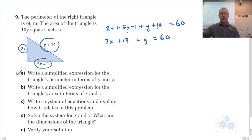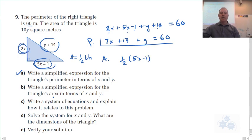Write the simplified expression for the triangle's area in terms of x and y. Well, the area for a triangle is 1 half base times height. So there's perimeter. Area now is going to be 1 half the base. 1 half times base times height because it's a 90 degree. This side is the height. 2x. And that's going to equal 10y.